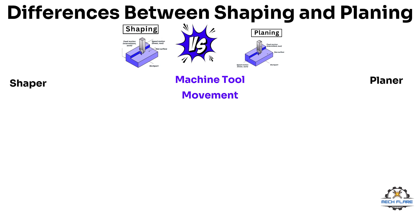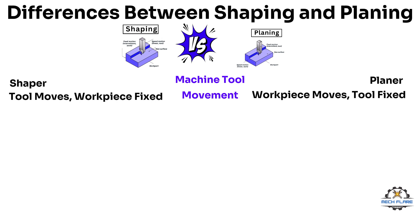Movement: In shaping, the cutting tool reciprocates while the workpiece is stationary. In planing, the workpiece reciprocates while the cutting tool is stationary.